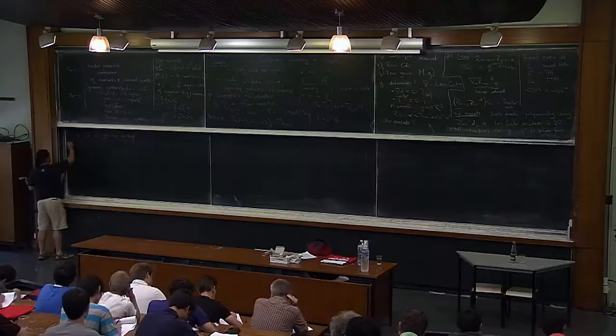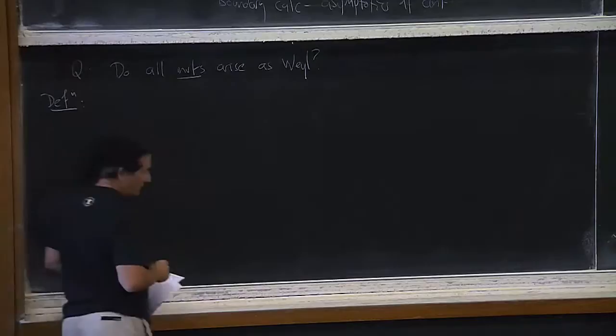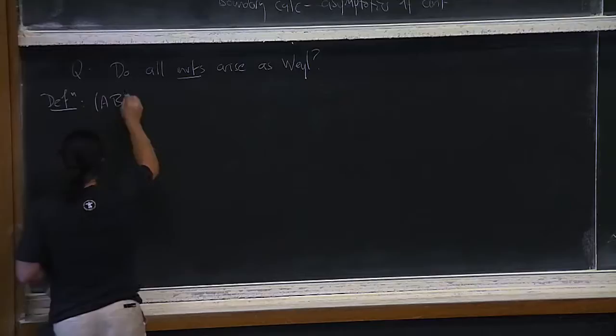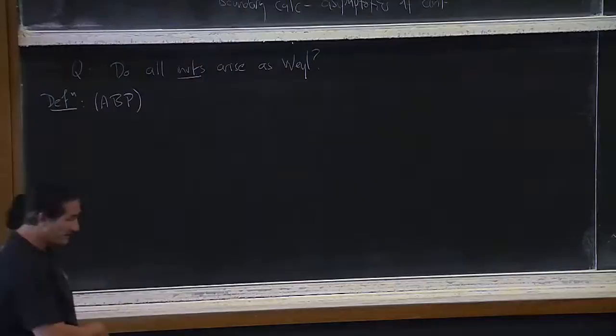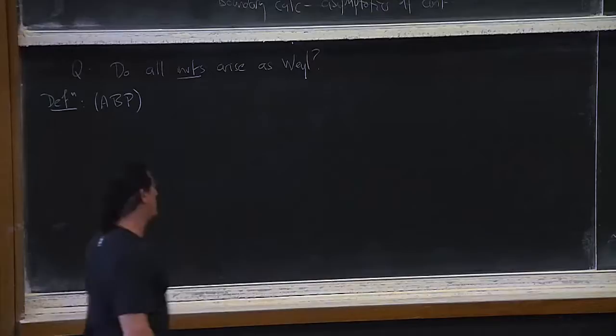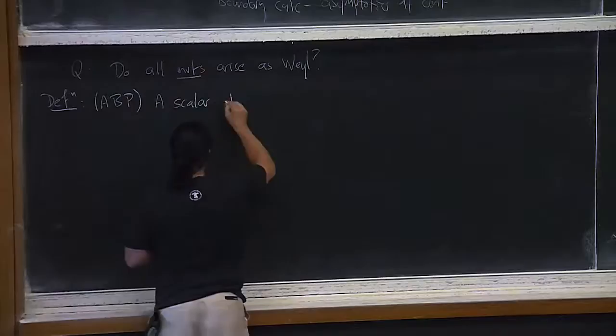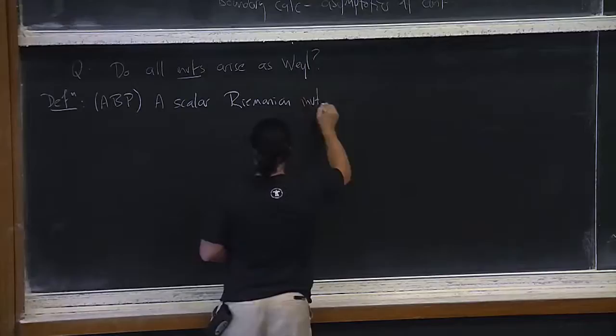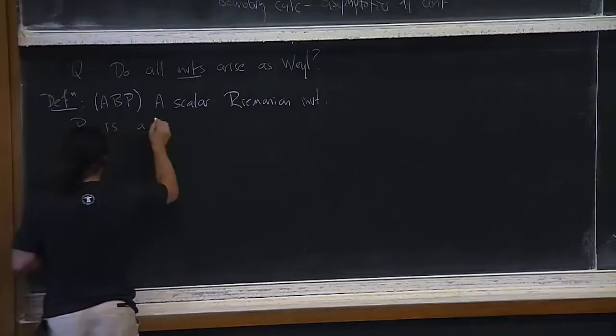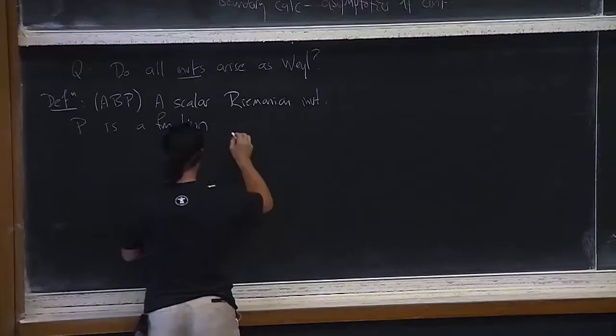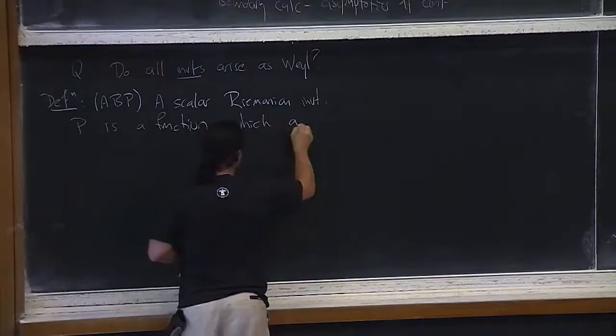In the case of scalar invariants, let me tell you what I mean. This is following, I think, Gilkey-Patodi in their heat kernel study — they needed to look at the way of constructing all Riemannian invariants. A scalar Riemannian invariant P is a function which assigns to any pseudo-Riemannian manifold a function P(G).